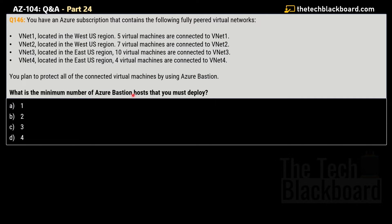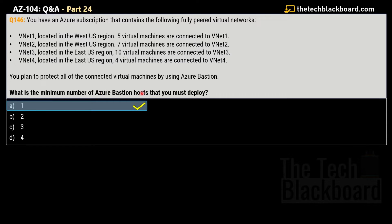What is the minimum number of Azure Bastion hosts you must deploy? Options are one, two, three, or four. The correct answer is option A — one. The minimum number of Azure Bastion hosts required to protect all connected virtual machines using Azure Bastion in fully paired virtual networks is one. This single Azure Bastion host will provide secure remote access to virtual machines across all the peered virtual networks.